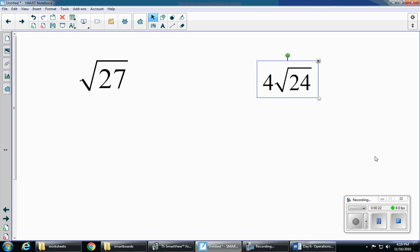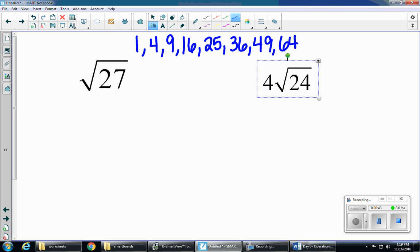First example, I have the square root of 27. The first thing I want to do is remember my perfect squares, so I always think it's helpful to write them out. One squared is one, two squared is four, three squared is nine, and I'm gonna keep going: 16, 25, 36, 49, 64, and it continues.